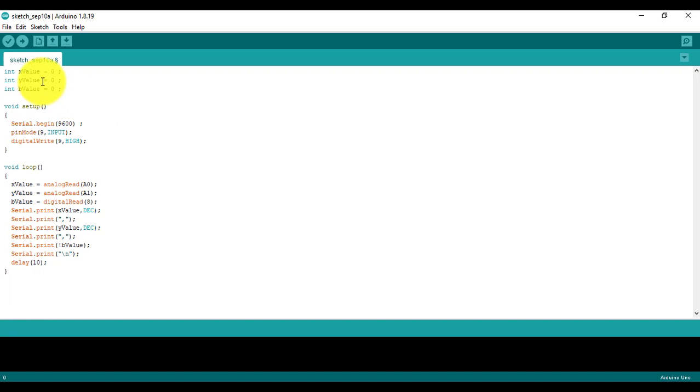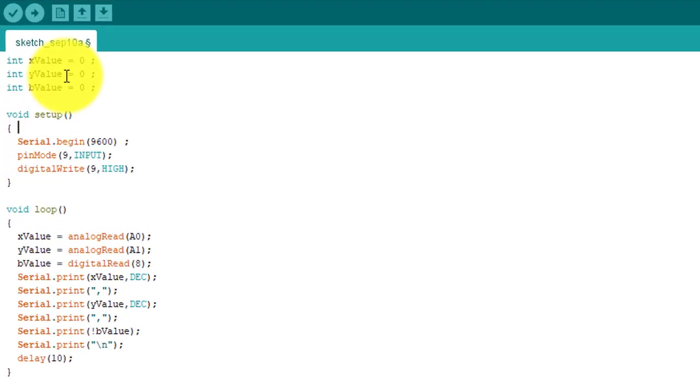Now let's take a look at the code that communicates with the joystick using the Arduino software. An Arduino code program consists of two main functions, the setup function and the loop function, in which the setup function runs only once at startup. In this setup function, we initialize the serial configuration with a baud rate of 9600, and configure pin 9 as the input pin to be able to read the state of the button.